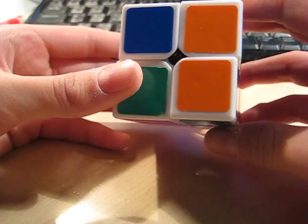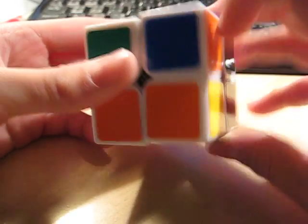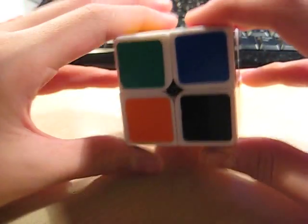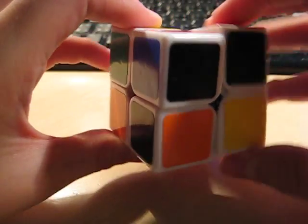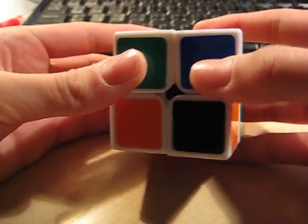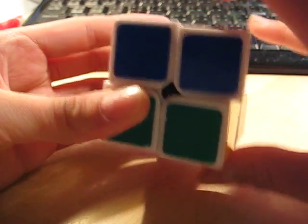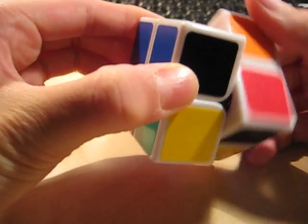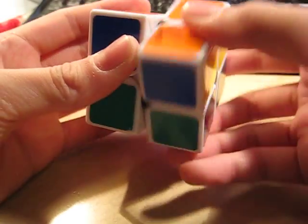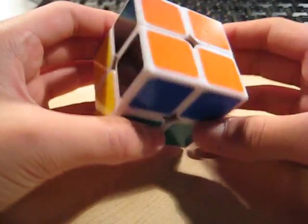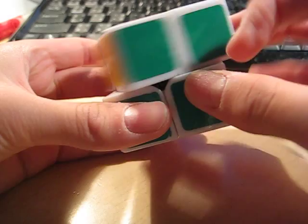R prime, F, R prime, F, B2, R, F prime, R prime, B2, R, F prime. Alright. That's the first case. And then after that, you can just orient your two by two.